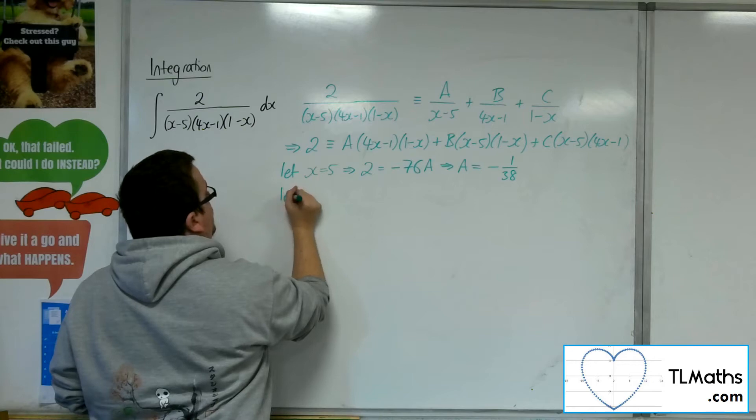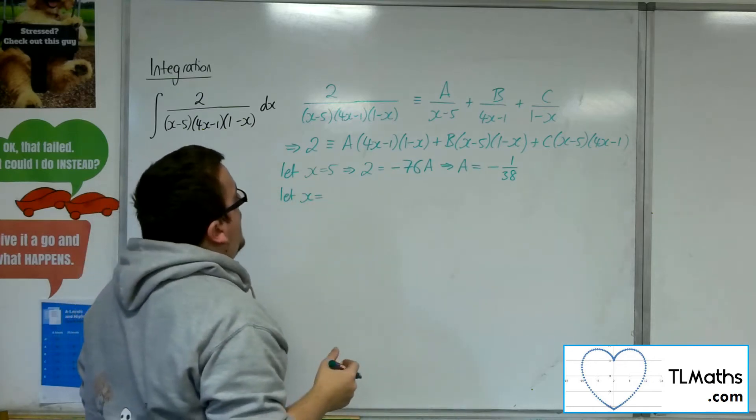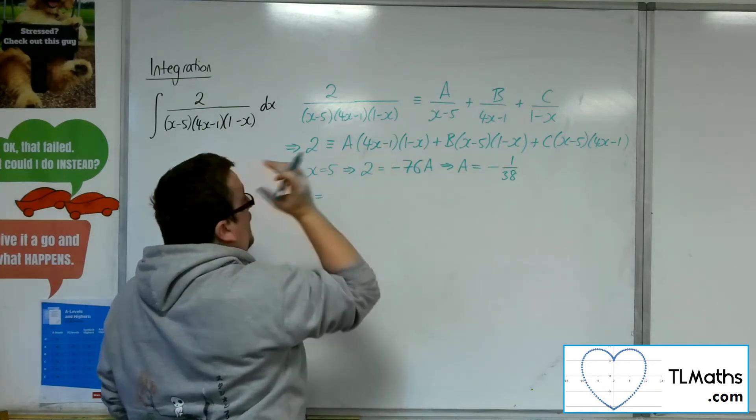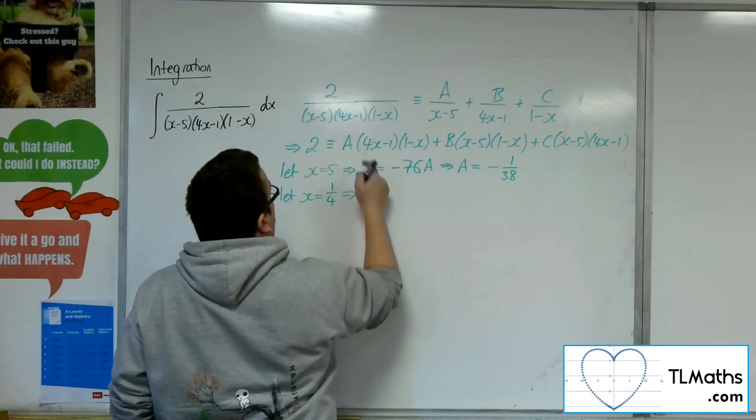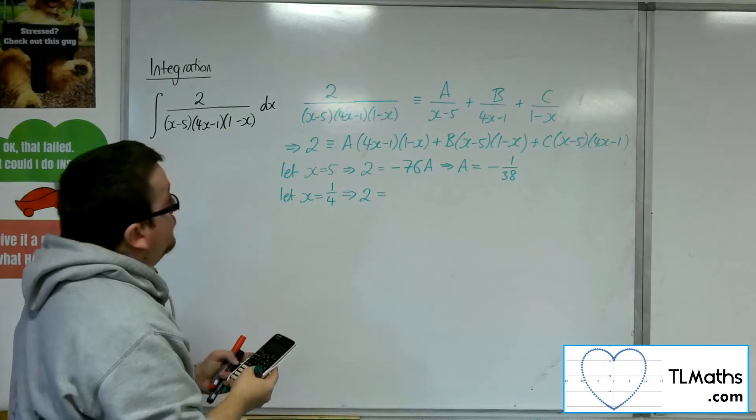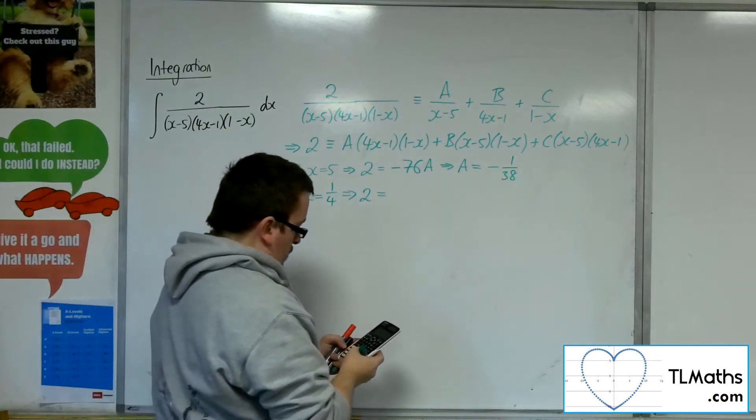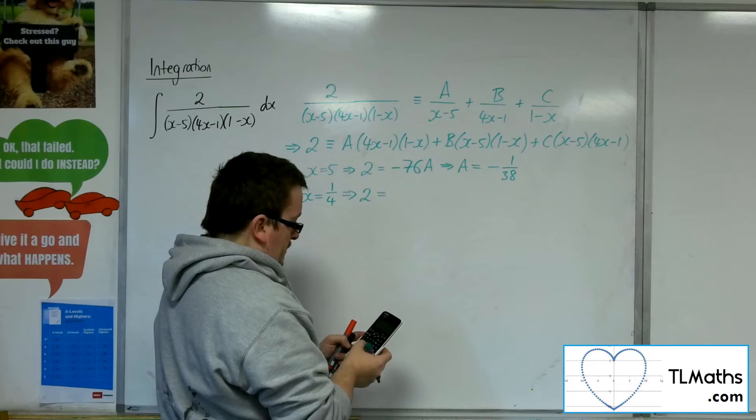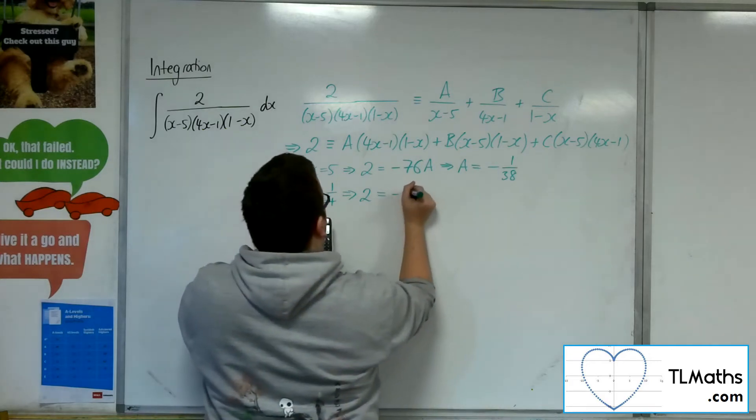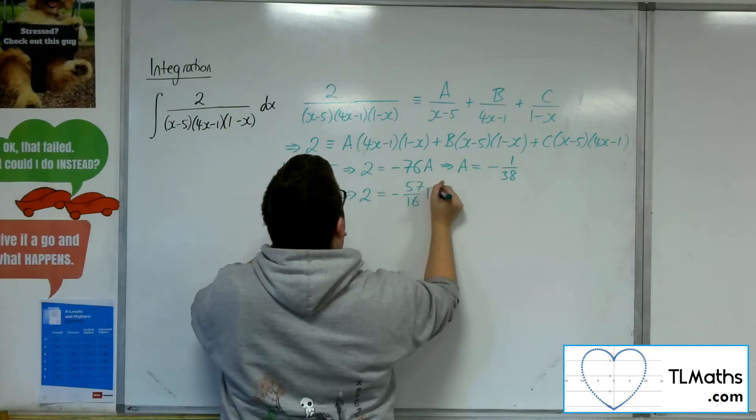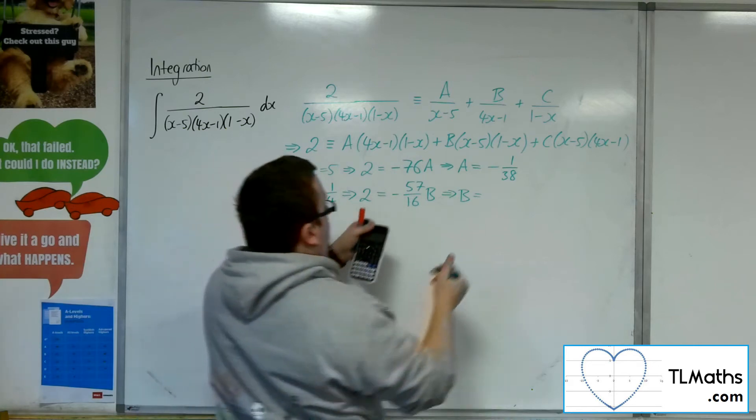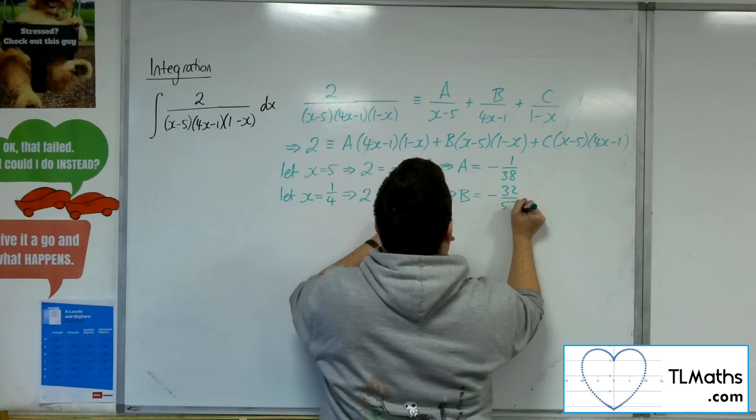Next, let x be 1/4 to knock out the other brackets. So 2 = B(1/4-5)(1-1/4), which gives -57/16 B, and so B = -32/57.